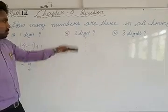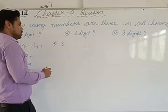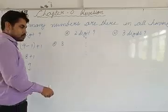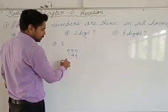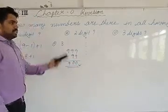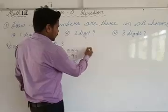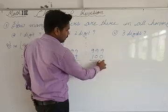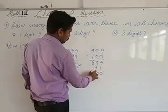For 3-digit numbers, one process is: greatest 3-digit number minus greatest 2-digit number — that is 999 minus 99 equals 900. Another process: greatest 3-digit number minus smallest 3-digit number plus 1 — that is 999 minus 100 plus 1 equals 900. Both processes give the same answer: total 900 three-digit numbers.